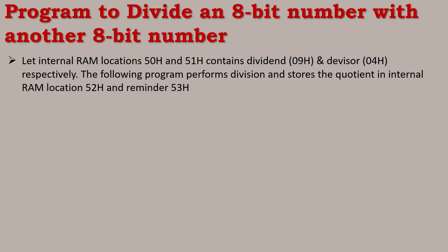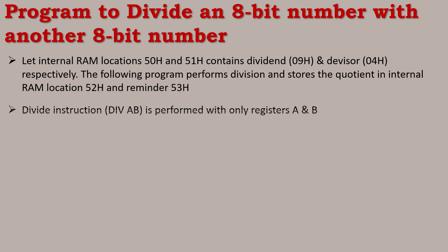The following program performs division and stores the quotient in internal RAM location 52H and the remainder in 53H. We will use the instruction DIV AB, which means divide the contents of registers A and B.